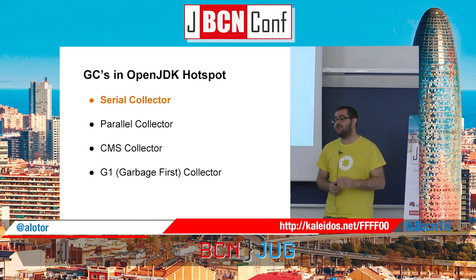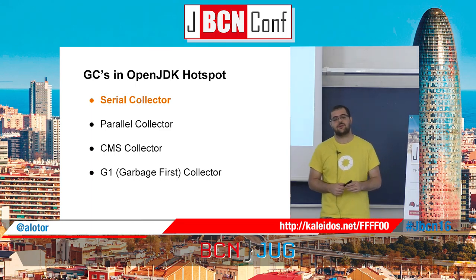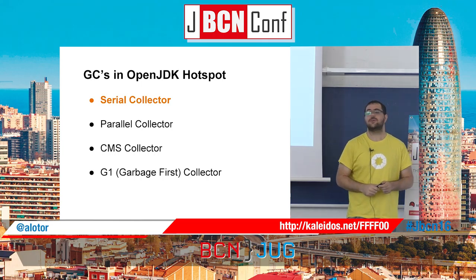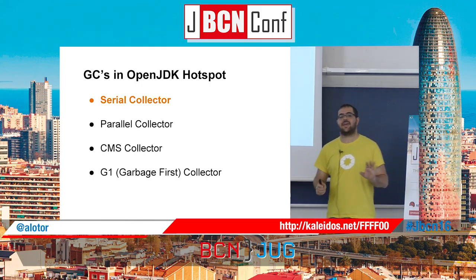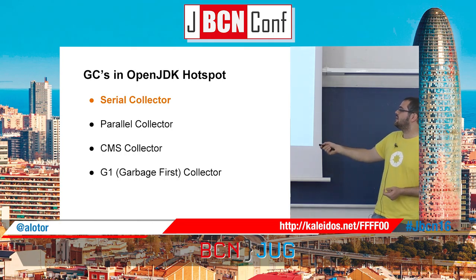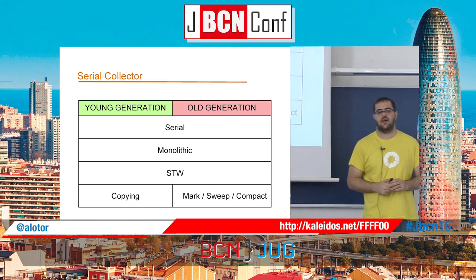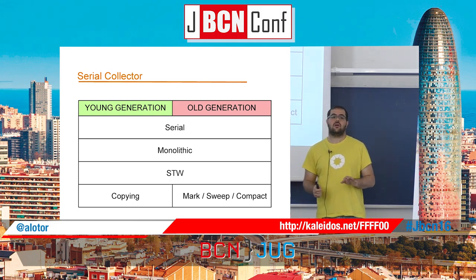Now I can talk about the four garbage collectors you can choose. How many of you know which garbage collector you're using? Very few. If you're using Windows you're using the serial GC; Linux or Mac on JDK 8, you're using the parallel GC; starting JDK 9, you'll use G1. The first one is the serial garbage collector: it's serial, monolithic, stop-the-world, with two algorithms — one for the young generation and one for the old generation.